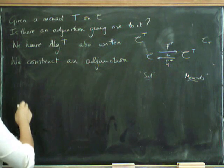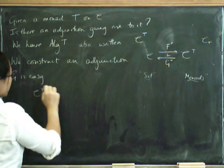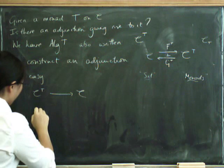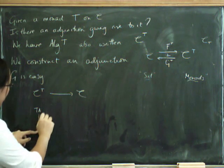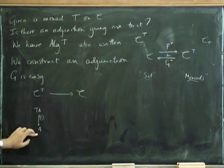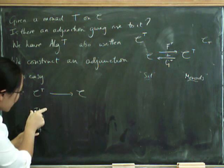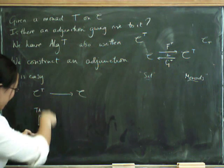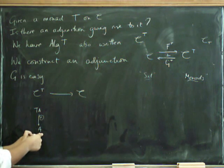So it's easy to construct G. G is easy, because it's going to go from C^T to C. Remember, what does an algebra for T look like? It looks like an underlying object A together with an algebra action, evaluating all the operations in here and sending them to here. In the monoid case, this is the underlying set of the monoid, this is the free monoid on that set, and then this evaluates where all those operations actually end up in the underlying set.